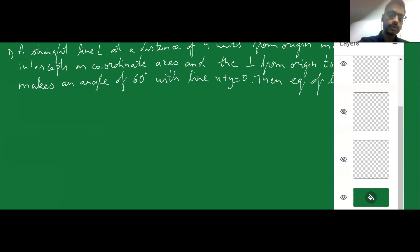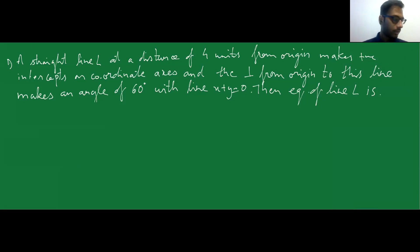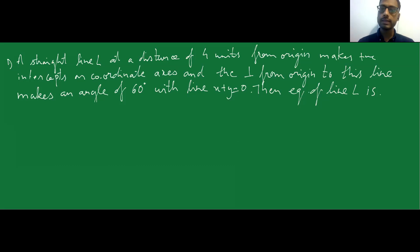Let us see this question which was asked in a JEE exam. The question says there is a straight line L at a distance of four units from the origin, making positive intercepts on the coordinate axis, and the perpendicular from the origin to this line makes an angle of 60 degrees. Find the equation of line L.